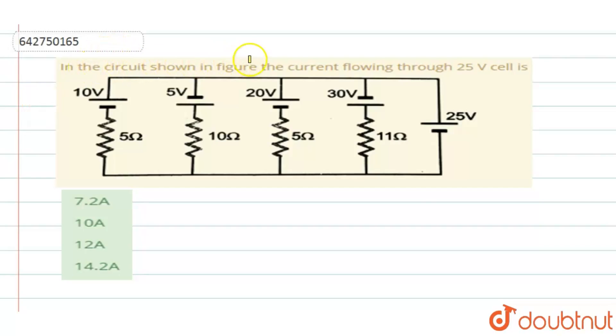In the circuit shown in figure, the current flowing through 25 volt cell is to be found. They have given you one circuit where you have a 25 volt cell here. So the current flowing through this 25 volt cell, you have to find it out. Other than this 25 volt, you can see in the circuit you have 4 different cells connected in parallel: 30 volt, 20 volt, 5 volt and 10 volt connected in parallel. And along with that, the internal resistances are also present.